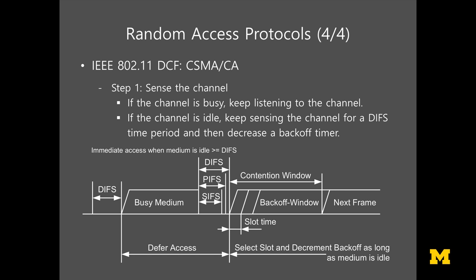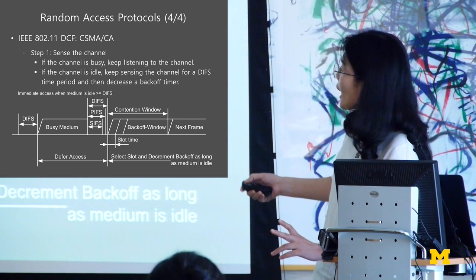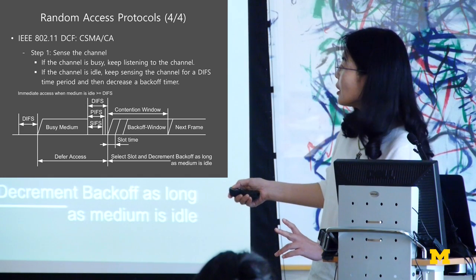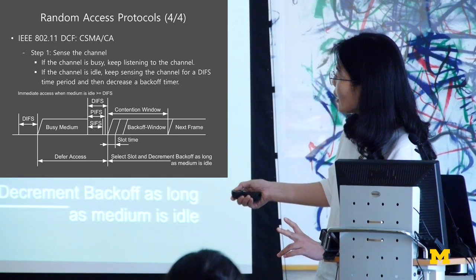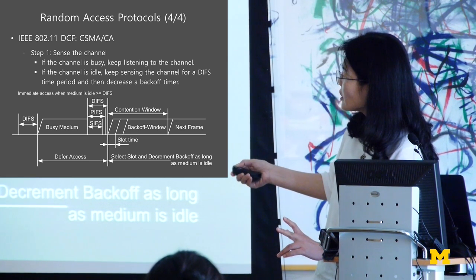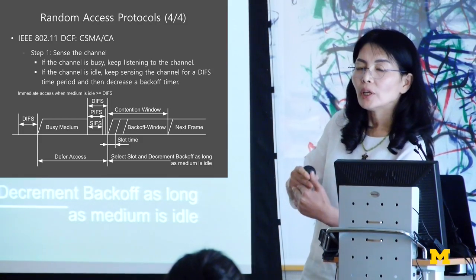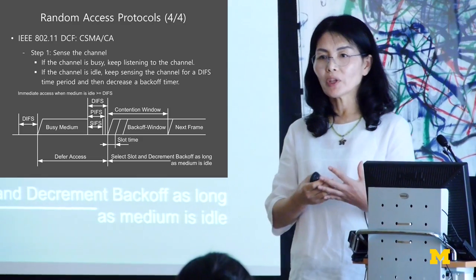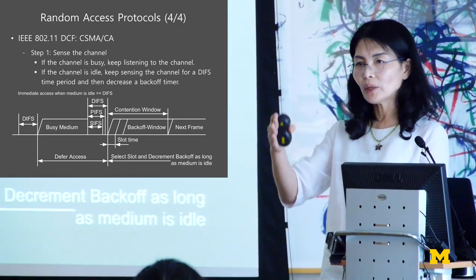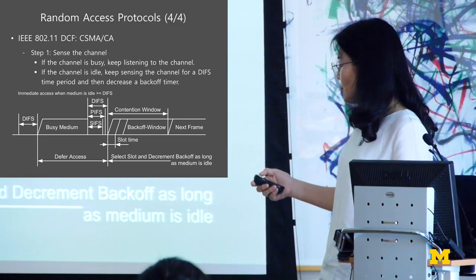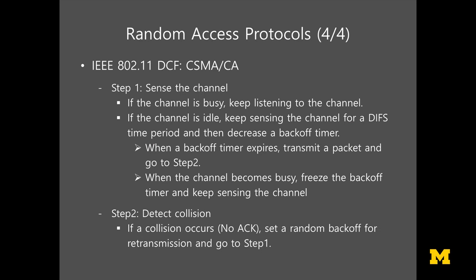In step 1, first we sense the channel. If the channel is busy, we keep listening until it becomes idle. We must listen for at least DIFS time because this is the collision avoidance mechanism. Once the channel is idle and remains idle for DIFS, we can back off. Each node has a backoff timer — for example, if your timer is 7, you decrease it by one each slot time. Once your backoff timer expires, you have a chance to transmit. When a collision is detected, you use the truncated BEB.